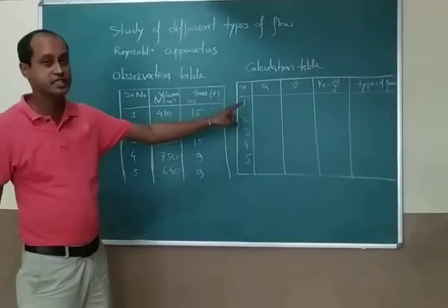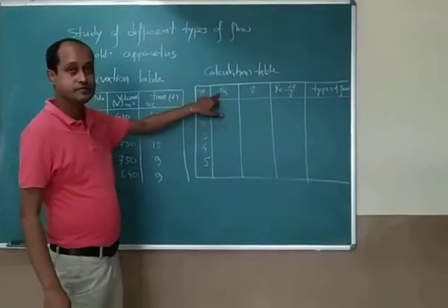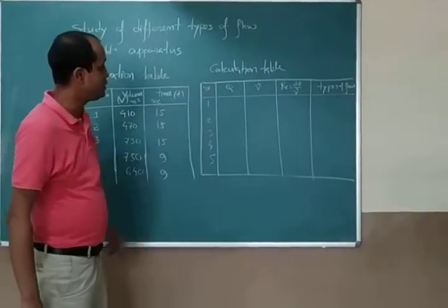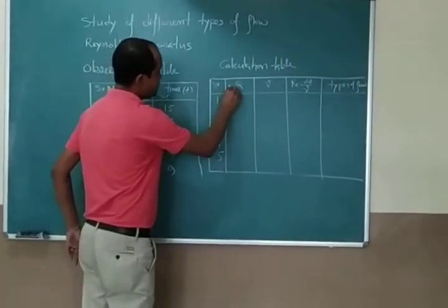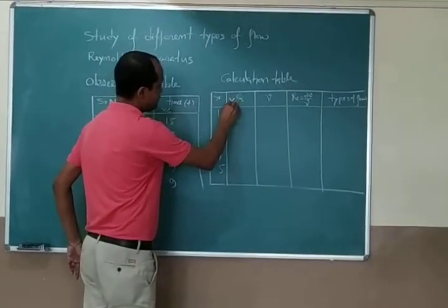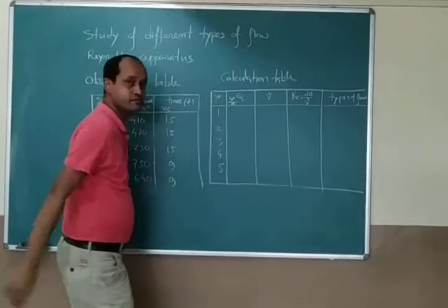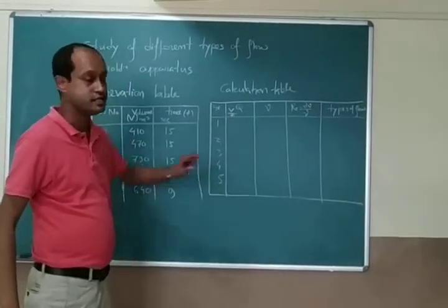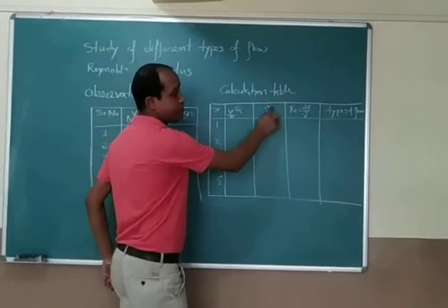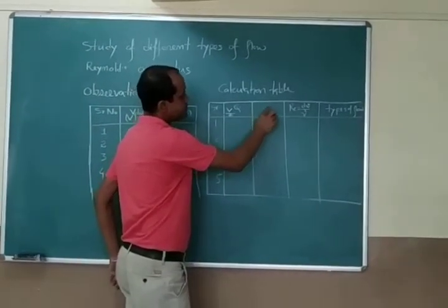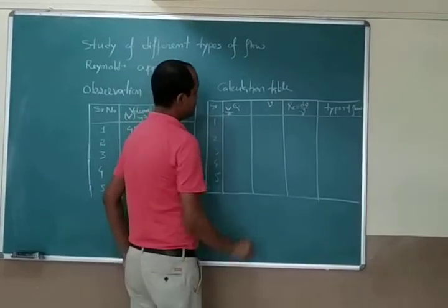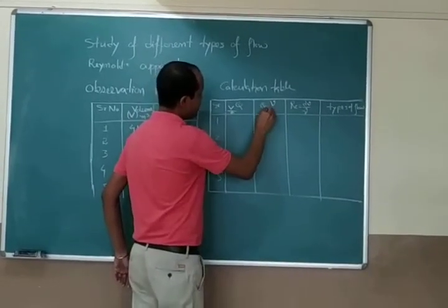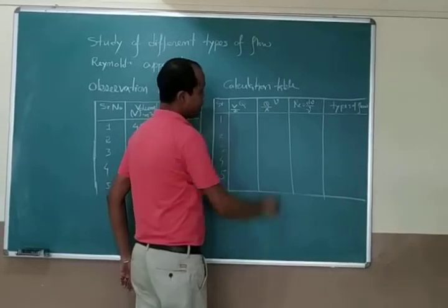After that, you have to find out the calculation table. This is your discharge. How can you find out Q? Q you can find out by volume by time. Capital V by T gives you the discharge. And this is small v.